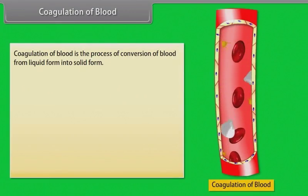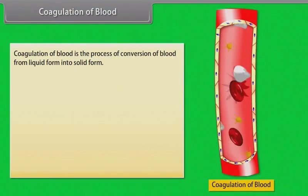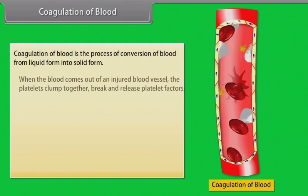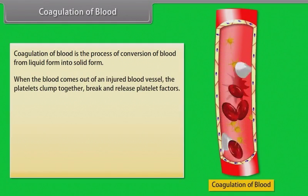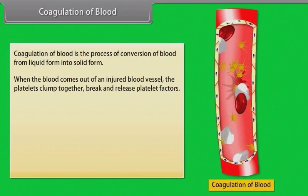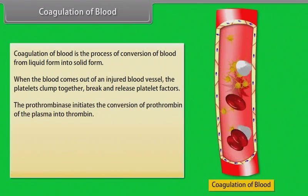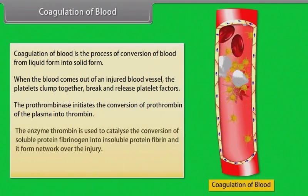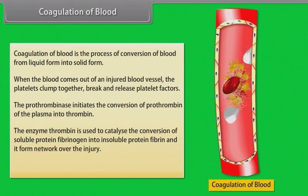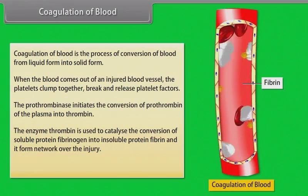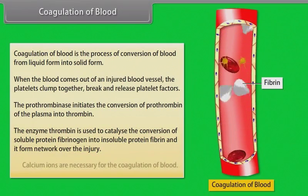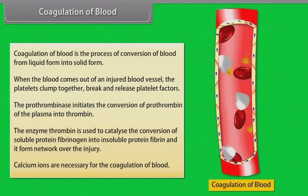Coagulation of blood is the process of conversion of blood from liquid form into solid form. When blood comes out of an injured blood vessel, platelets clump together, break and release platelet factors. Prothrombinase initiates the conversion of prothrombin in the plasma into thrombin. The enzyme thrombin catalyzes the conversion of soluble protein fibrinogen into insoluble protein fibrin, forming a network over the injury. Calcium ions are necessary for the coagulation of blood.